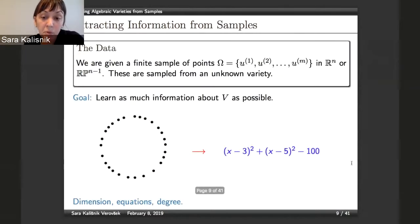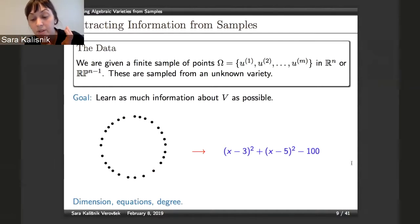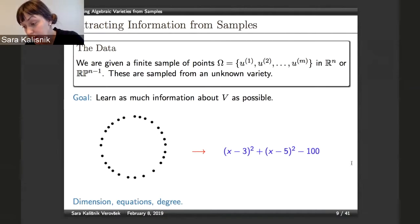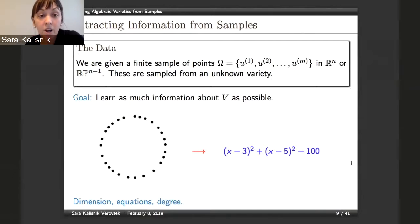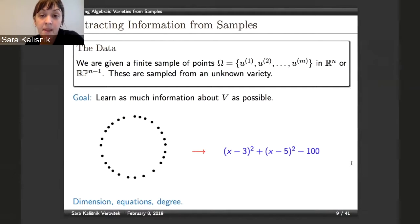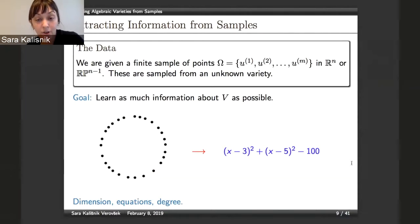Equipped with these definitions, our assumption in data science is that we are given a finite sample of points, either in Euclidean space or projective space, that comes from an unknown variety. The goal is to learn as much information about this variety V as possible — in particular, going back to the circle example, what the vanishing equations are, the dimension, and the degree.